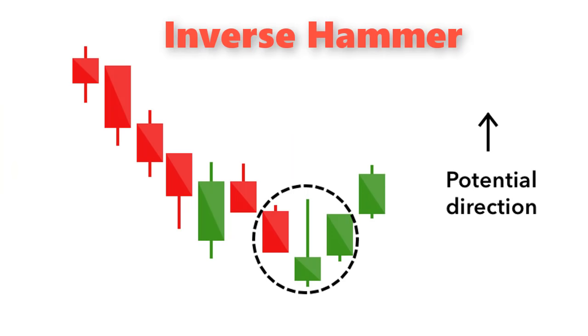Inverse hammer. A similarly bullish pattern is the inverted hammer. The only difference being that the upper wick is long, while the lower wick is short. It indicates a buying pressure, followed by a selling pressure that was not strong enough to drive the market price down. The inverse hammer suggests that buyers will soon have control of the market.